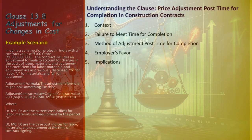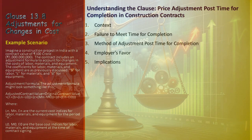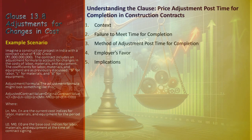In construction contracts with price adjustment clauses, the contract price is subject to modification based on fluctuations in costs like labor, materials, and equipment throughout the project. The timely completion of works is a critical aspect, influencing how price adjustments are handled if the project overruns the agreed time for completion. If the contractor fails to complete the works within the agreed time for completion, specific clauses for price adjustment come into effect.